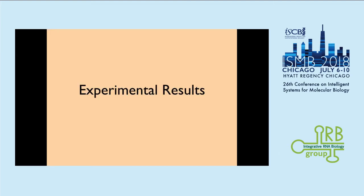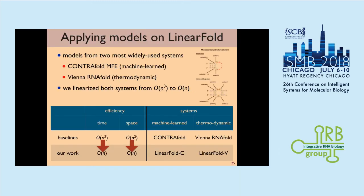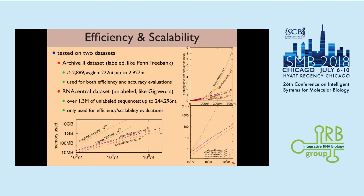Now I'll show the experimental results. We applied two different models on LinearFold. One is a machine learning model — we pick CONTRAfold from Stanford University. The other is a thermodynamic model — we pick Vienna RNAfold. We linearize both systems using our prediction method, from cubic time and quadratic space to linear time, calling them LinearFold-C and LinearFold-V. We evaluate on two datasets: the ArchiveII dataset, which has reference secondary structures for accuracy and efficiency evaluation, and the RNAcentral dataset with very long RNA sequences for evaluating efficiency and scalability.